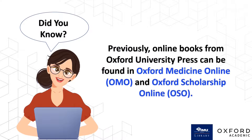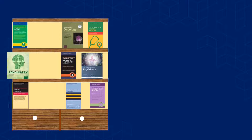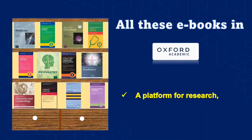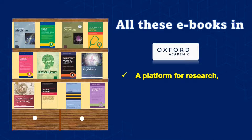Previously, online books from Oxford University Press could be found in Oxford Medicine Online and Oxford Scholarship Online. Now, you can have all these e-books in Oxford Academic.